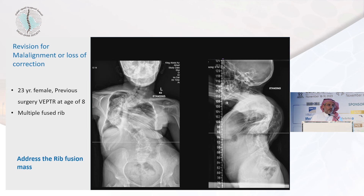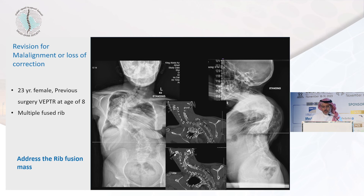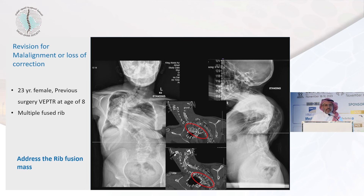Post-VEPTR cases need to be addressed differently. We shouldn't only look at the spine, because with prolonged use of VEPTR, you can see how the ribs become fused. Without addressing the fused ribs, you may try to correct the patient intraoperatively and the patient simply will not open up. One of the most important things when revising VEPTR patients is to release the fusion mass at the rib level, or at least release the ribs from the costotransverse junction to allow the spine to move freely.